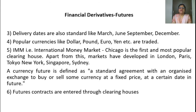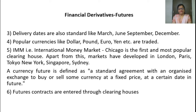Delivery dates are also standard — like March, June, September, December — meaning they are issued quarterly. Popular currencies like Dollar, Pound, Euro, Yen, etc. are traded. International Money Market, Chicago, is the first and most popular clearing house. Apart from this, markets have developed in London, Paris, Tokyo, New York, Singapore, and Sydney.